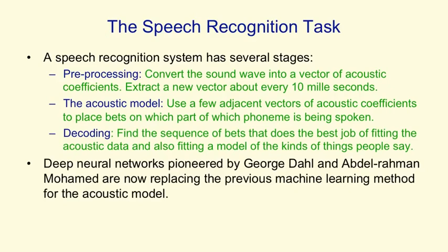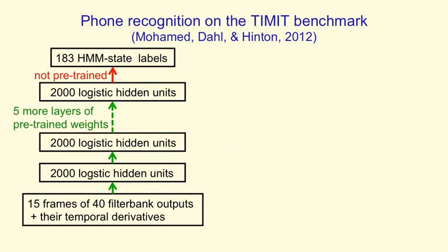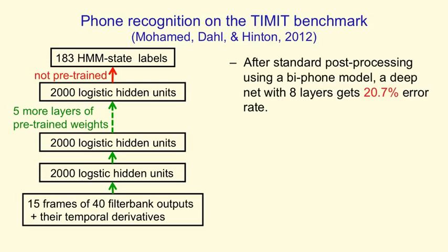Currently, deep neural networks pioneered by George Dahl and Abdul Rahman Muhammad at the University of Toronto are doing better than previous machine learning methods for the acoustic model and are now beginning to be used in practical systems. Dahl and Muhammad developed a system that uses many layers of binary neurons to take acoustic frames and make bets about the labels. They used a fairly small database with only 183 alternative labels. After standard post-processing, they got a 20.7% error rate on a very standard benchmark — which is kind of like the MNIST for speech.